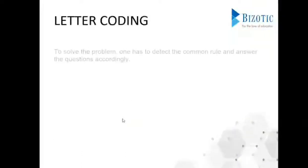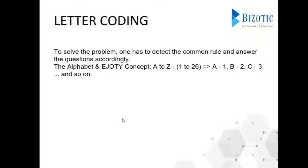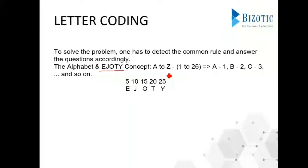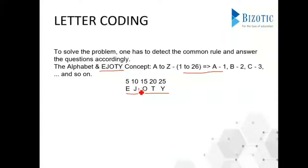To solve letter coding questions we use the EJOTY concept. We need to remember the positions of all alphabets from A to Z — A is 1, B is 2, C is 3, and so on up to 26. Since remembering every position can be time-consuming, we just remember that E is in the 5th position, J is 10th, O is 15th, T is 20th, and Y is 25th. For example, for the alphabet K — since we know J is 10th, K comes right after at the 11th position. This makes finding alphabet positions much faster.